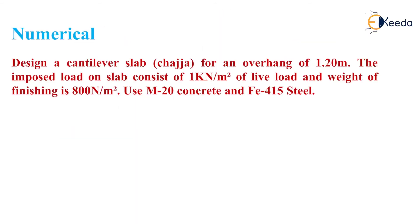Numerical: Design a cantilever slab for an overhang of 1.2 meter. The imposed load on the slab consists of 1 kN per meter square of live load and weight of finishing is 800 N per meter square. Use M20 concrete and Fe415 steel.